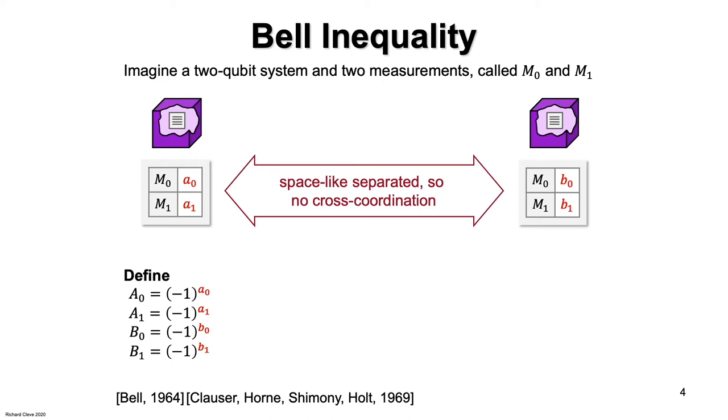I claim that this inequality holds, which is called the CHSH inequality. Note that each of the four terms on the left side can be plus one or minus one. So we might imagine that the left side can be as large as four,